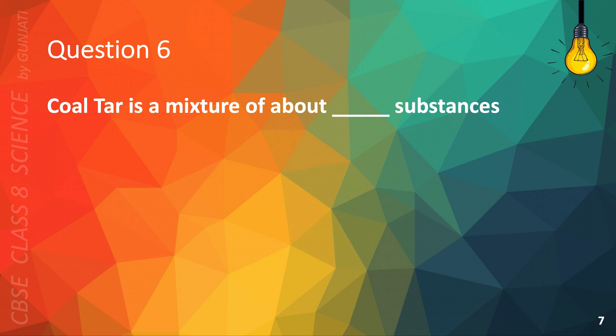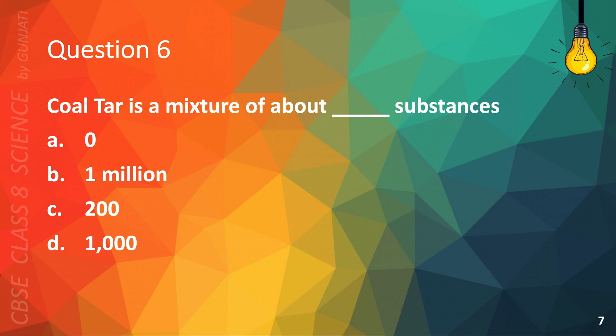Question 6. Coal tar is a mixture of about blank substances. A. Zero, B. One million, C. Two hundred, or D. One thousand? The correct answer is C. Two hundred.